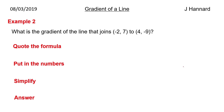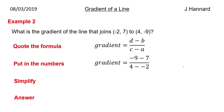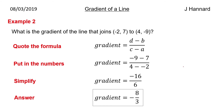What is the gradient of the line that joins (−2, 7) to (4, −9)? Quote the formula: gradient equals back-take-back over front-take-front. It will be minus 9 minus 7 — no double negative there — over 4 minus minus 2, which is a double negative, so we need to be careful. Tidying up: minus 16 divided by 6, because 4 minus minus 2 is 6. Simplified, that is minus 8 over 3.